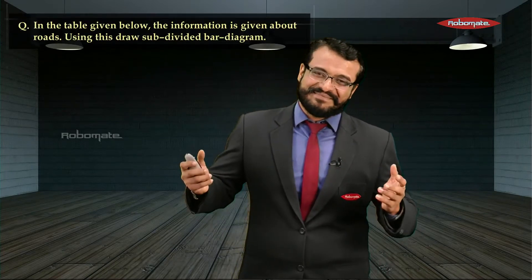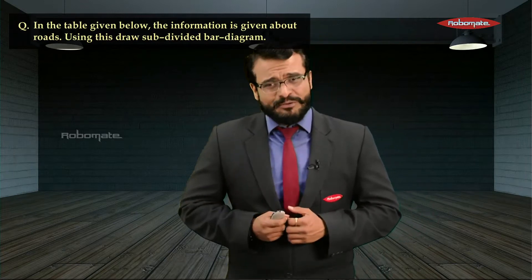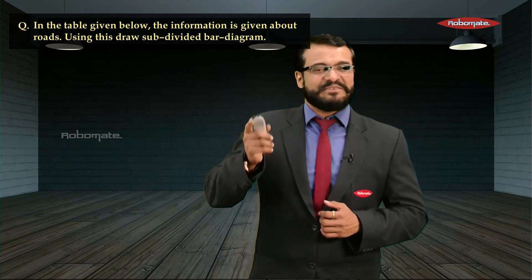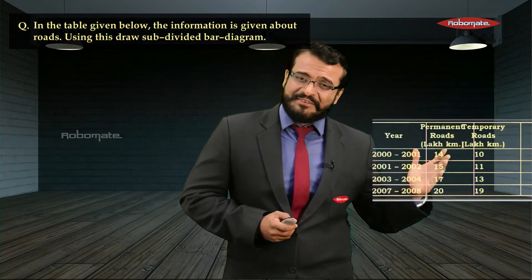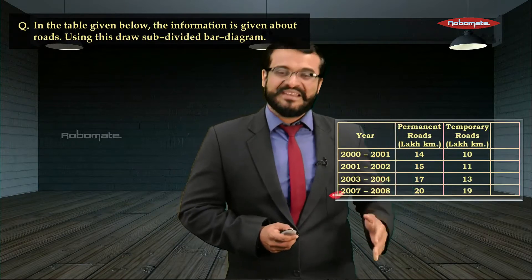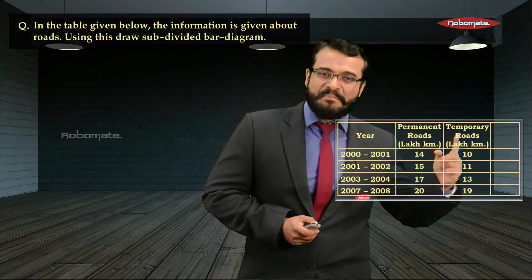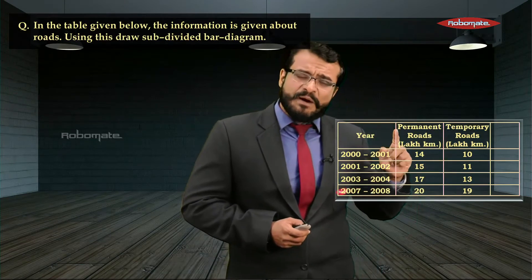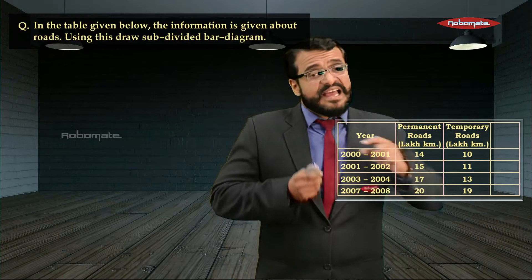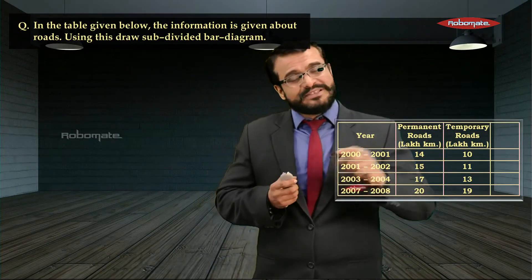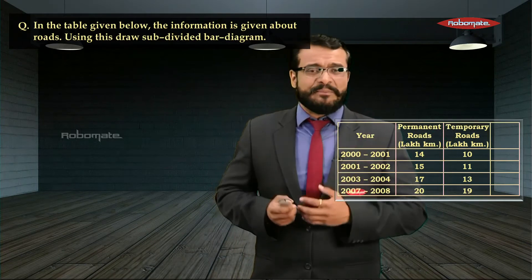Hello students, in this module we'll be seeing a sum based on a subdivided bar diagram. The question gives a table with information about roads. The first column is years, the second column is permanent roads in lakh kilometres, and the third column is temporary roads in lakh kilometres — meaning the length of permanent and temporary roads in lakh kilometres.